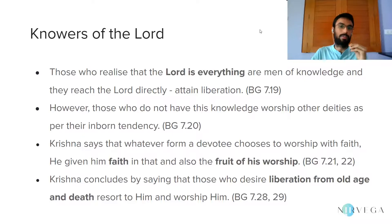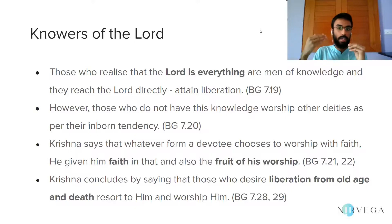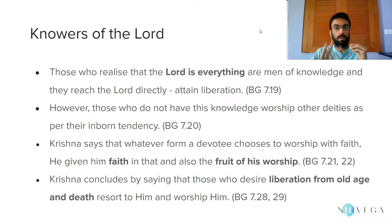Krishna concludes chapter 7 by saying that those who desire liberation from old age and death resort to him and worship him alone. By 'him' here, we need not understand the physical body or Vishnu — they resort to him, the pure consciousness, the Satchitananda which is the reality behind everything. That is a brief summary of the 7th chapter, and the important topic to focus on from the net exam perspective is the four kinds of devotees.